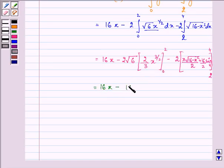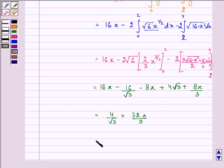This is further equal to 16π minus 16/√3 minus 8π plus 4√3 plus 8π/3, which equals 4/√3 plus 32π/3, which equals (4/3)(8π - √3) square units.